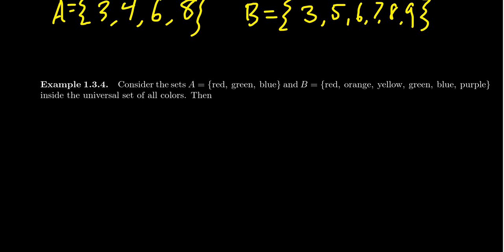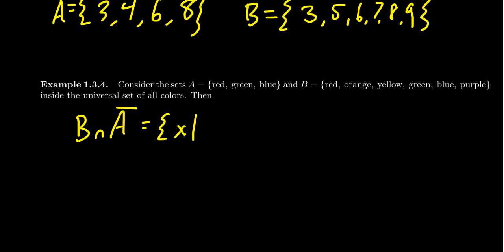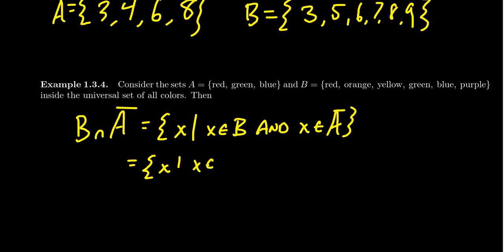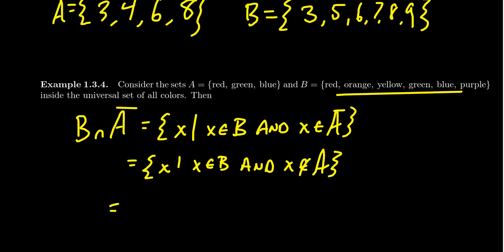If you're writing hexadecimal codes for colors, you could have thousands of different colors. So think of the universal set as the set of all colors. Then we could ask: what is A complement? We'd need to know every single color to be clear about that, so we need a more explicit universe. But what we could do is ask: what does B intersect A complement equal? Without specifying the universe, we can still define this set — we're looking for all colors X such that X is in B and X is not in A.